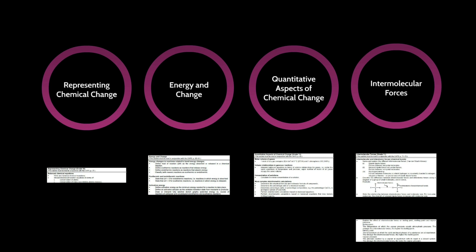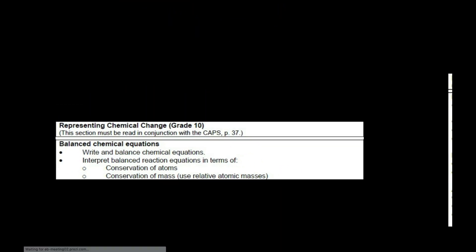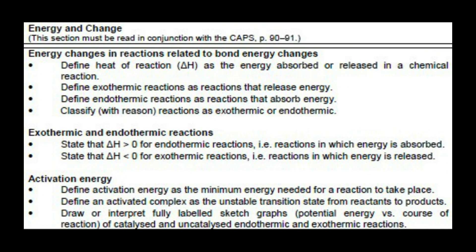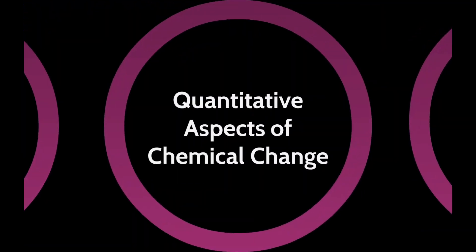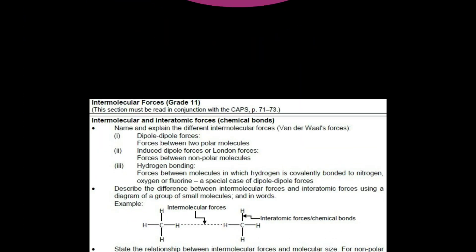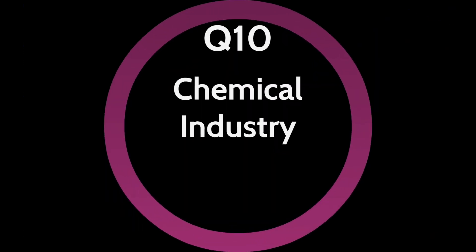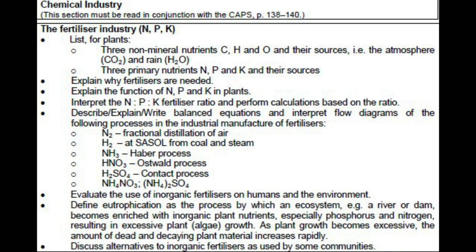It is important to note that there are four sections in the NSC syllabus that are not explicitly examined: representing chemical change, energy and change, quantitative aspects of chemical change, and intermolecular forces. These are all expected to be understood although not explicitly examined. The final section is chemical systems for 15 out of the 150 marks — Question 10 on the chemical industry, specifically the fertilizer industry.